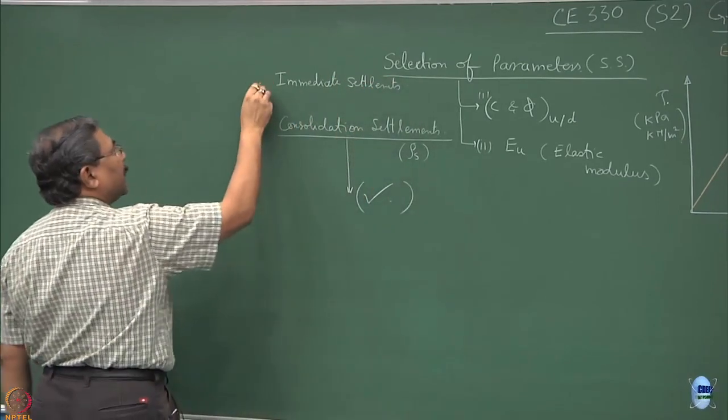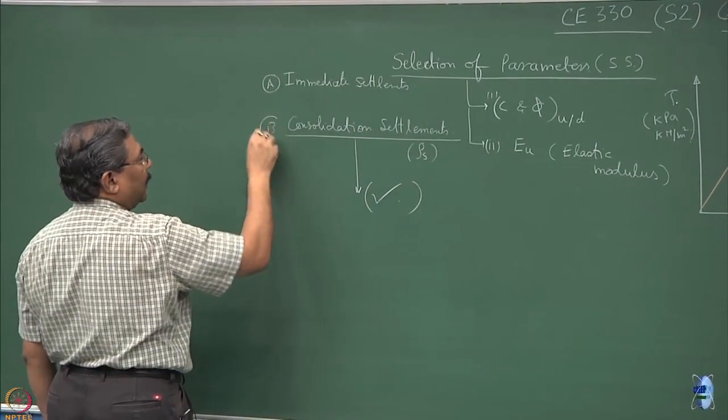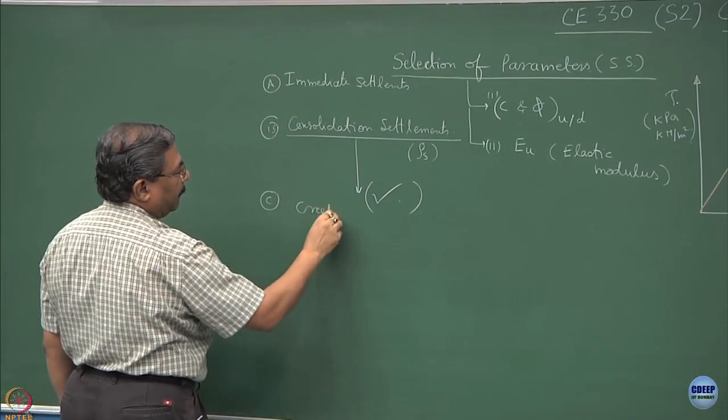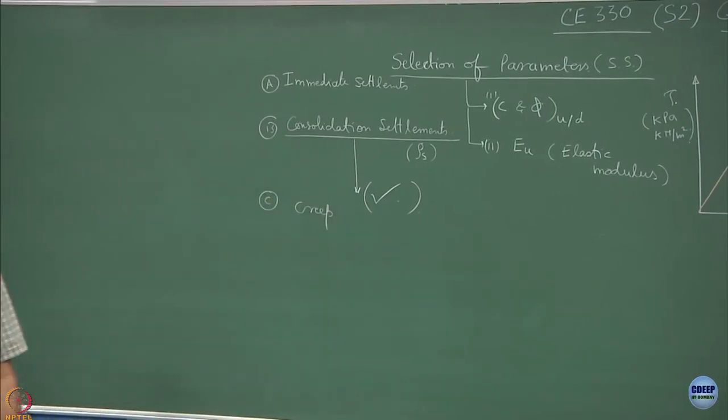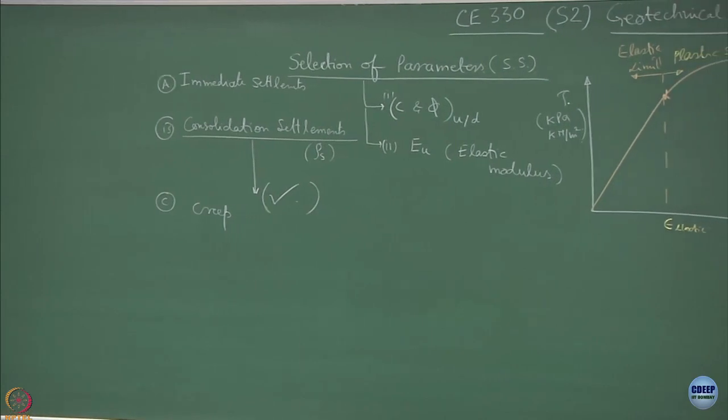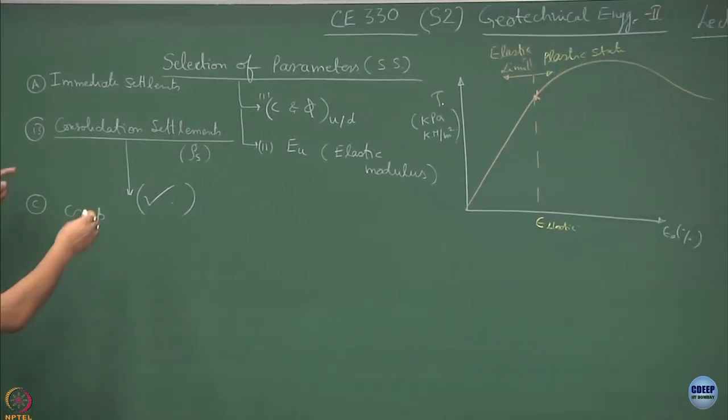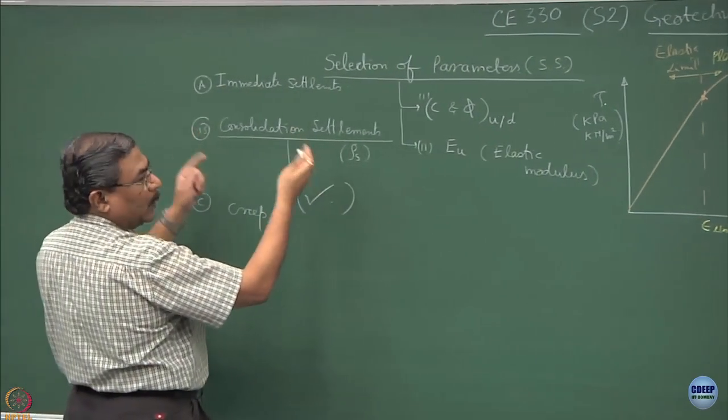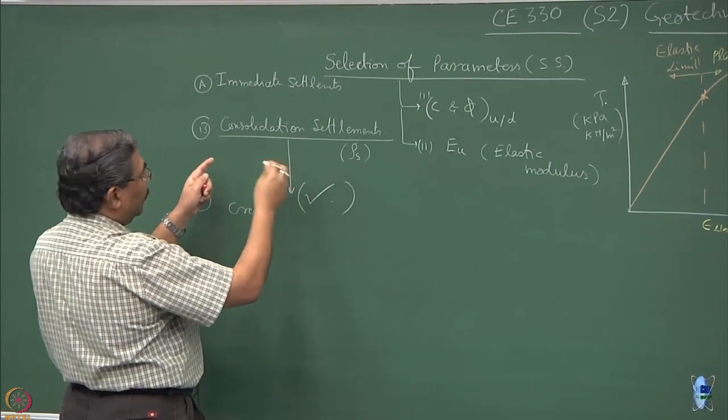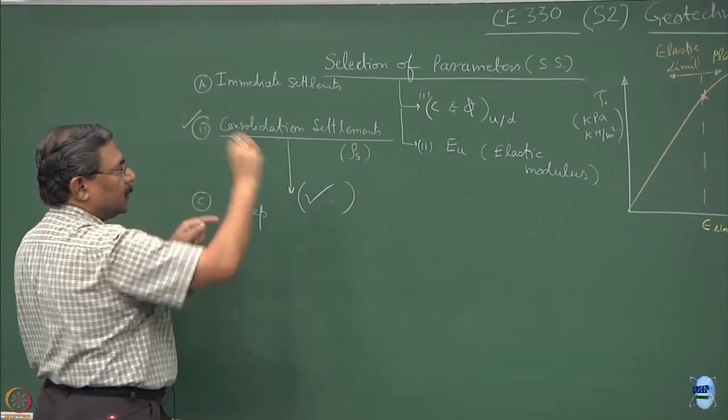This stage is followed by the stage which is elastic in nature, and we call those type of settlements as immediate settlements. So this becomes A, B, and followed by the creep.